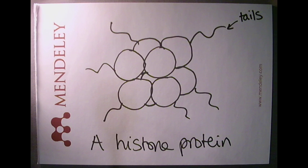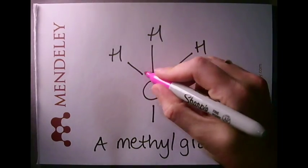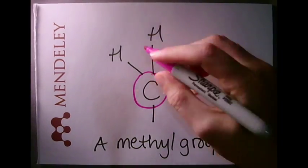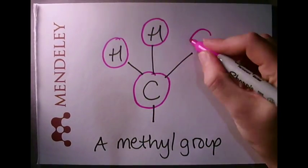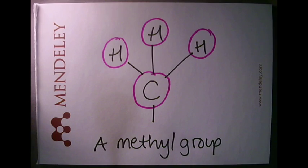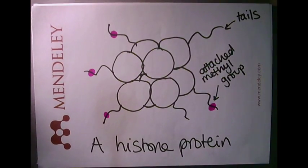So what does that mean? A methyl group is one carbon atom bonded to three hydrogen atoms. When this methyl group is added to an amino acid within the histone protein tail, we say that it has been methylated.